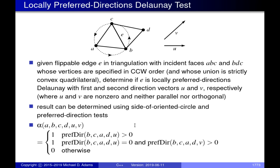What we have is some edge in the triangulation, and we want to check whether it satisfies the locally preferred directions Delaunay condition. If this condition is satisfied by all flippable edges in the triangulation, then the triangulation is a preferred directions Delaunay triangulation, which is always uniquely determined.